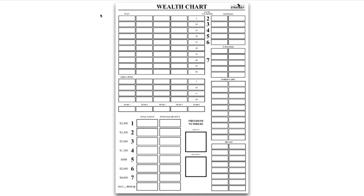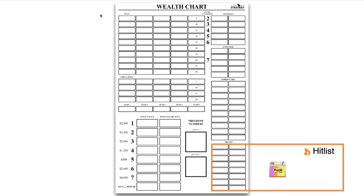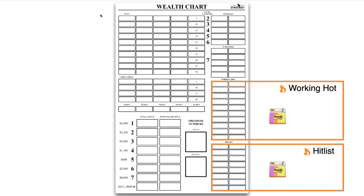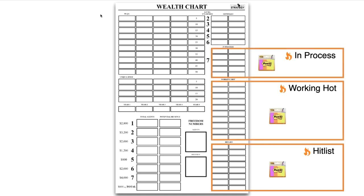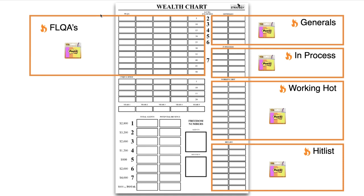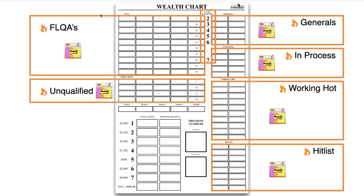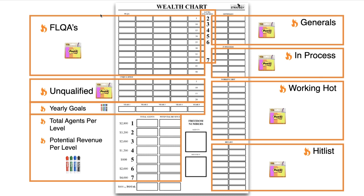Let me walk you through the wealth chart training. The wealth chart is broken up into nine key sections: your hit list, your working hot, your in process, a place for your generals, where you check your FLQAs (your frontline qualifying agents), your unqualified agents, your yearly goals, your total agents per revenue, the potential revenue share per level, and finally, my favorite part — your freedom numbers.